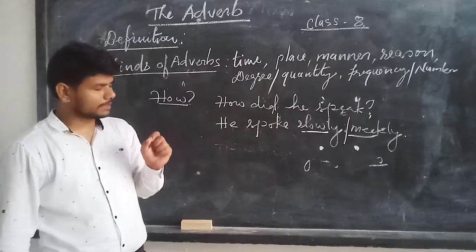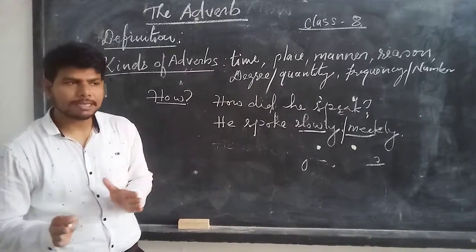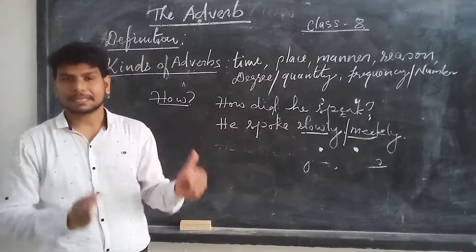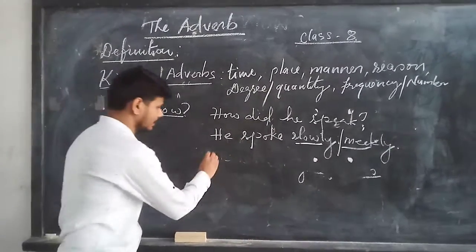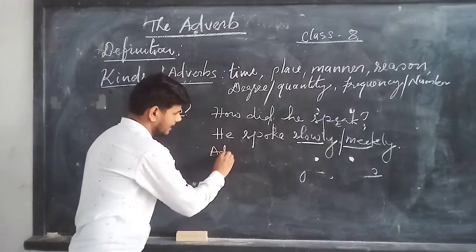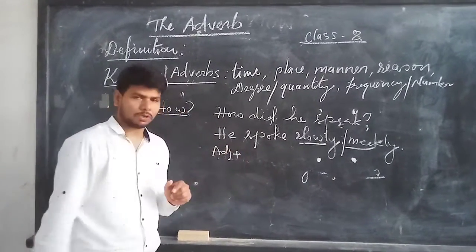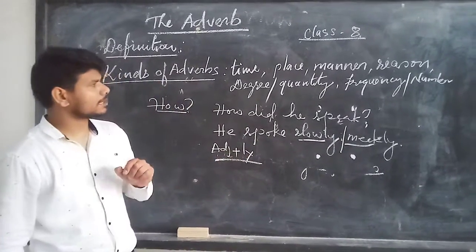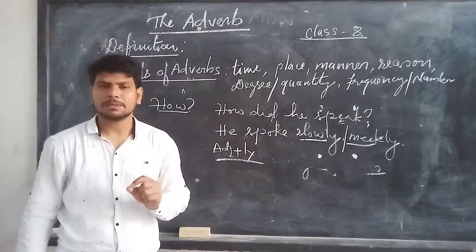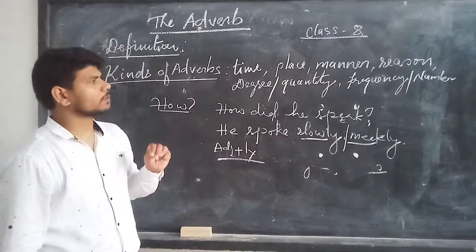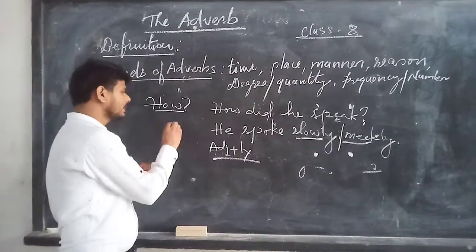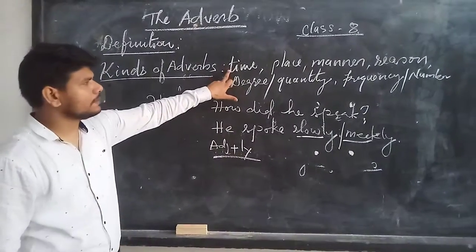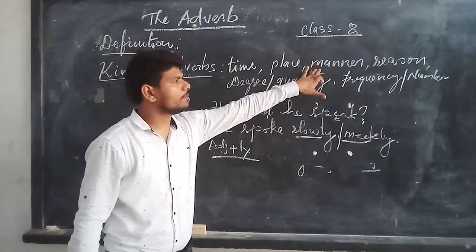Adverb of manner has a very quick indication. Normally these adverbs come from adjectives and end with '-ly'. It's not always the case, but normally. So these are the three kinds of adverbs we talked about so far: adverb of time, adverb of place, and adverb of manner.